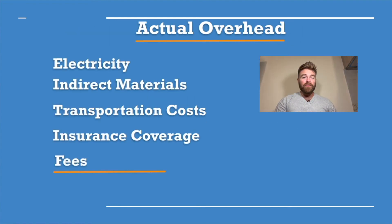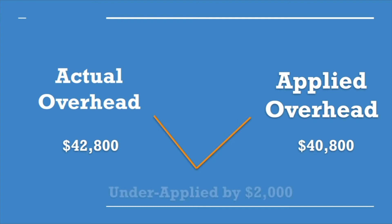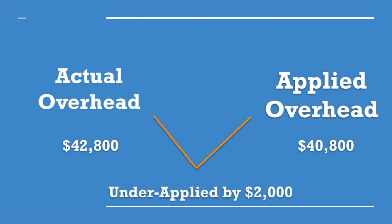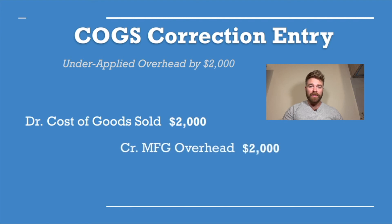At the end of the five months, when we finish the job, we add up our actual overhead that we incurred, and it totaled $42,800. Our actual overhead was $42,800, but our applied overhead was $40,800, so we actually under-applied it by $2,000. We make a correction entry: debit cost of goods sold by the under-applied $2,000 and credit our manufacturing overhead by $2,000.